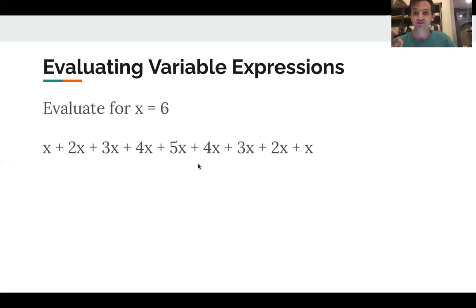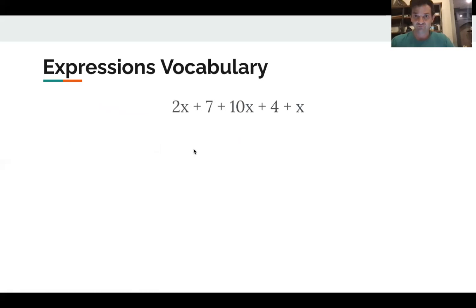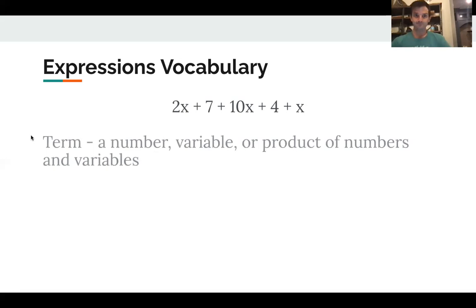All right. So before we get more into the technique, here's some vocabulary. So this is an expression. You guys know that. It's a combination of numbers and variables and operations. It has five of these things called terms. 2x is a term, 7 is a term, 10x is a term, 4 is a term, x is a term. A term just means a number or a variable or a product of them, like a number times a variable. So there's five terms in this problem.